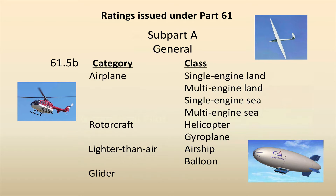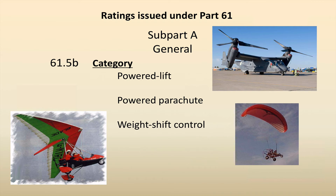Ratings that can be issued under Part 61, in terms of the type of aircraft you can be rated in, break down into category and class under 61.5 paragraph B. Airplane is the broader category, and class is underneath it. Within the airplane category we can have single-engine land, multi-engine land, single-engine sea, multi-engine sea. For rotorcraft, it's helicopter and gyroplane. Lighter than air is airship or balloon. A glider is a glider — there is no further class distinction. We also have powered lift, powered parachute, and weight-shift-control categories.